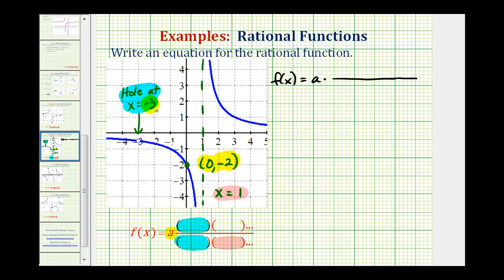If there's a hole at x equals negative three, that means negative three is a zero of both the numerator and denominator. Meaning negative three makes the numerator and denominator equal to zero. Which means they both must contain a factor of x plus three.